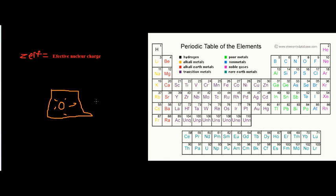The core electrons prevent the valence electrons from achieving a stable noble gas configuration. The valence electrons are around the outside of the core electrons and are usually involved with reactions. The valence electrons are the outermost part of any atom at the highest energy level, and you can identify them because they have the highest principal quantum number in an electronic configuration.